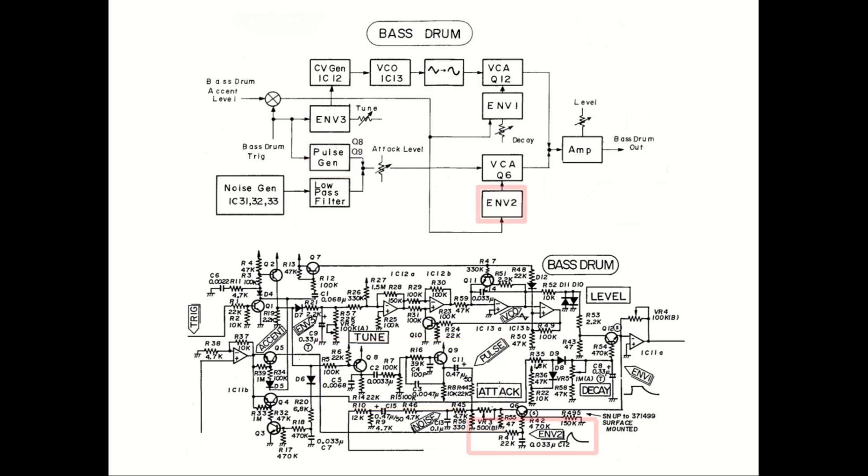The envelope generator 2 is basically a fixed envelope where the output level is controlled by the accent input, and it controls the VCA for the front part of the kick sound. The VCA itself is a single transistor Q6 that is also connected to the same summing node as the other one. And this leads us to the final stage in the signal path, which is an inverting op-amp that acts as a buffer for the output, where the level pot controls the amplification.